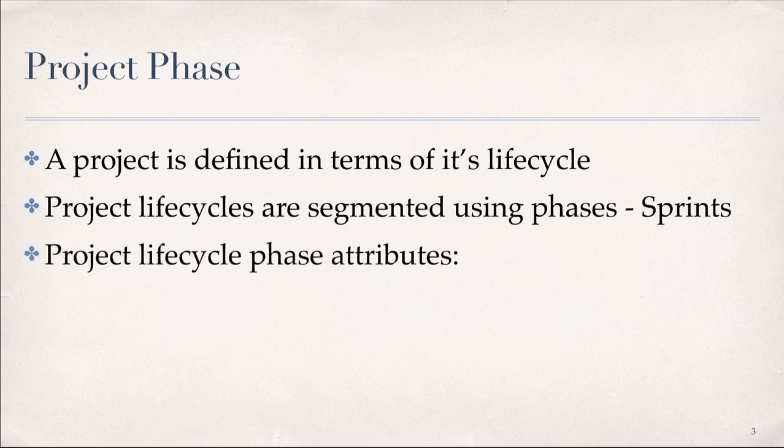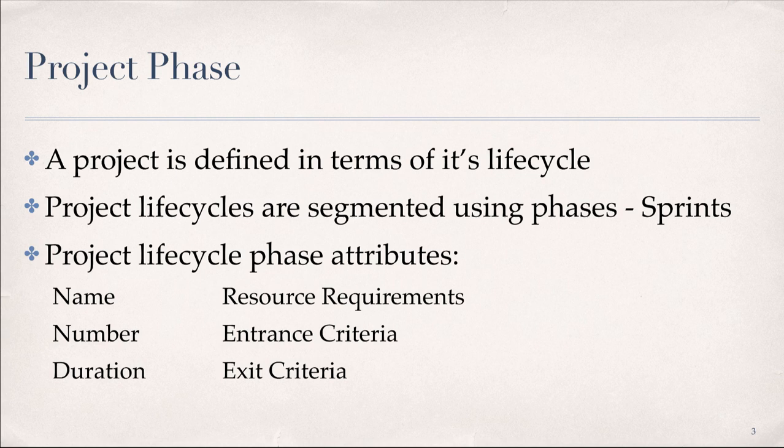The phase in a project life cycle can be described using a variety of attributes. Attributes may be measurable and unique to a specific phase. Examples include the name — such as phase A, phase B, phase 1, phase 2, or the proposal phase — as well as the number of phases in a project life cycle, duration as time-boxed events typically in the form of a week, a month, or a quarter, and resource requirements having to do with people, buildings, equipment, etc.